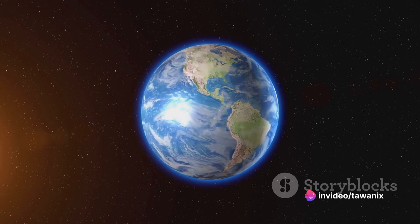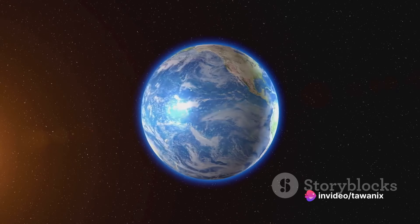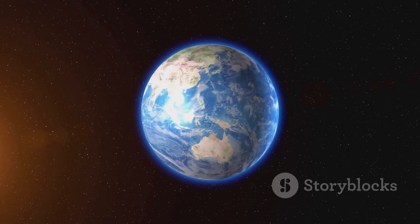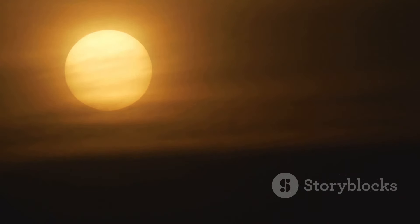As our planet spins, different parts of it face the sun, basking in daylight before being turned away to experience the cool of night. This daily rhythm regulates temperatures, preventing our world from becoming too hot or too cold to sustain life.